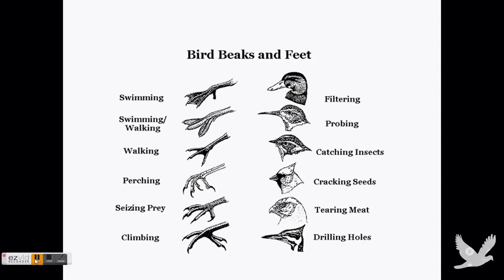Birds living near water tend to have webbed feet, while birds that live in trees have longer, curved nails which help them with staying on the branch.